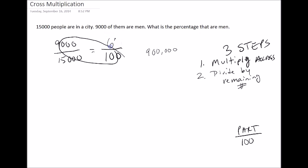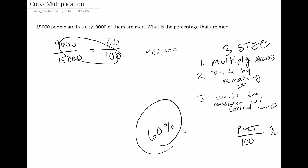Now, step 3 is, we're going to write the answer with the correct units. So our answer is 60 over 100, or 60%. Following these three steps allows for you to do any numbers.